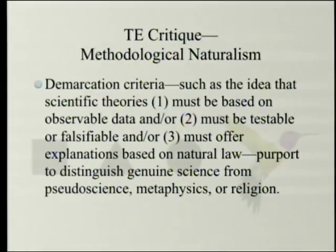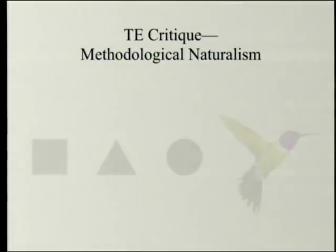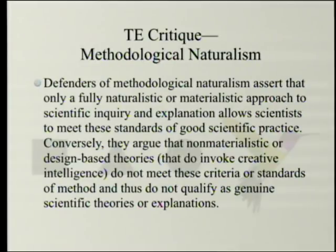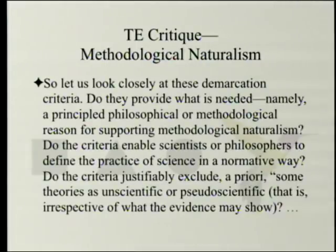Demarcation criteria — such as the ideas that scientific theories must be based on observable data, must be testable or falsifiable, and must offer explanations based on natural law — purport to distinguish genuine science from pseudoscience, metaphysics, or religion. Defenders of methodological naturalism assert that only a fully naturalistic approach to scientific inquiry allows scientists to meet these standards, while design-based theories that invoke creative intelligence do not. Do these demarcation criteria provide a principled philosophical reason for supporting methodological naturalism? Do they justifiably exclude some theories as unscientific, irrespective of what the evidence may show?